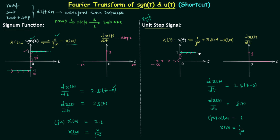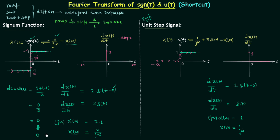But we know the correct Fourier transform of u(t) is 1/jω + π·δ(ω). So where is the π·δ(ω) term? The problem is that we have not considered the DC value. In the signum function case, the DC value was equal to 0 — the average value is (1 + (−1))/2 = 0. The Fourier transform of a DC value of 0 is 0, so it did not affect the result.